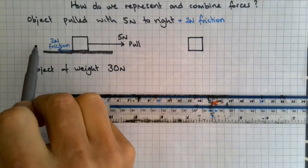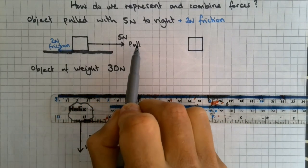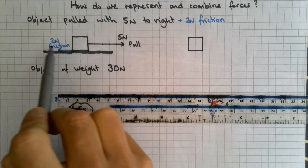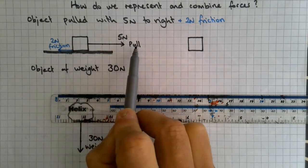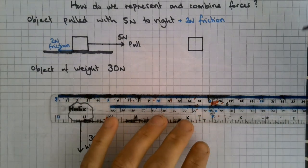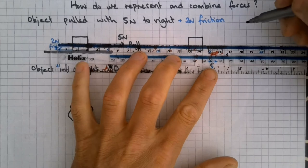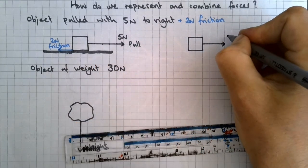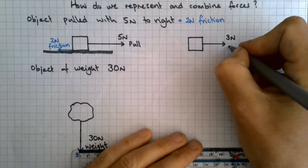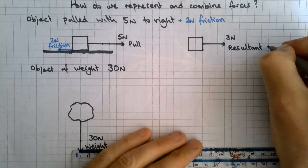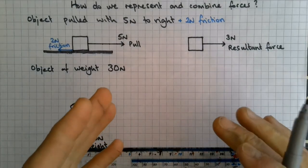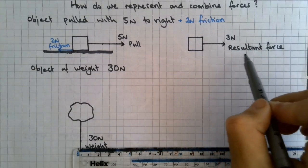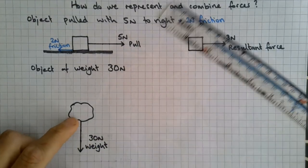It's really easy when the forces or the vectors are in the same plane, and that means they're in the same line of action. So we've got 5 newtons pulling this way, 2 newtons of friction that way. So overall, there's going to be a resultant force of 3 newtons to the right. We call it the resultant force. That single force, so combining the forces gives a single force, which we call the resultant force.